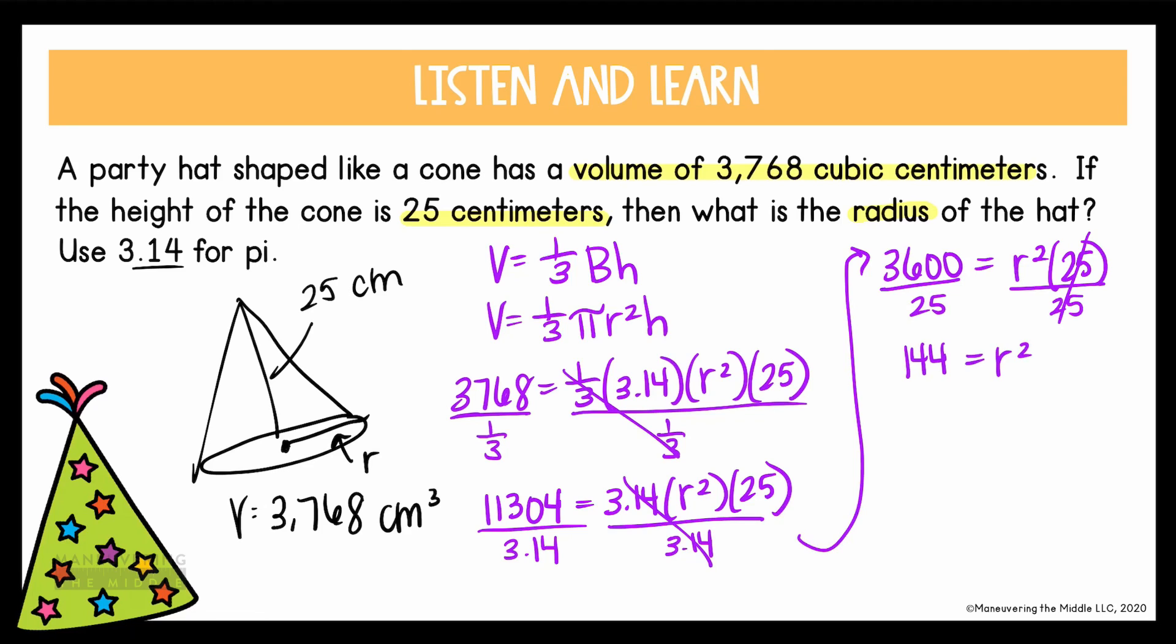Now r is being multiplied by itself to give us 144. The inverse of squaring something is to take the square root. So if we can get the square root of 144, that will give us r. The square root of 144 is 12. So the radius here is 12 centimeters.